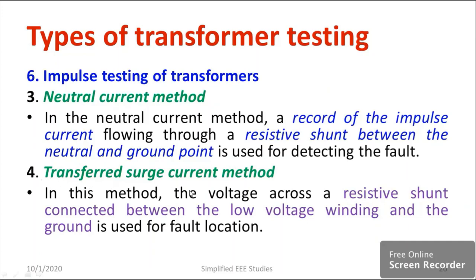Moving on to the transfer surge current method — it is similar to the neutral current method. In this method, the voltage across a resistive shunt connected between the low voltage winding and the ground is used for fault detection. In the neutral current method we measure current, while in this method we check the voltage across the shunt between the low voltage winding and ground. These are the different procedures under impulse testing of transformers.